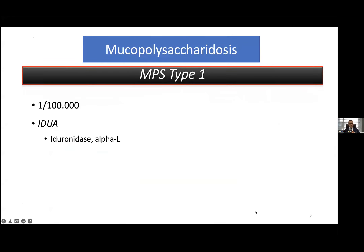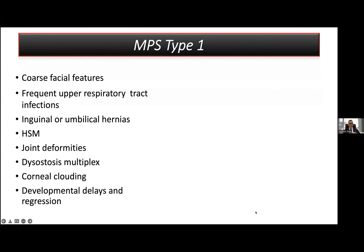I want to begin with MPS type 1. This is the classical MPS type, seen in 1 in 100,000, and the responsible gene is the IDUA gene. The inheritance pattern is autosomal recessive, and more than 300 different variants have been described up to now. In MPS type 1, we are expecting to have facial features, frequent upper respiratory tract infections, hernias, hepatosplenomegaly, joint deformities, dysostosis multiplex, corneal clouding, and developmental delays and regression.